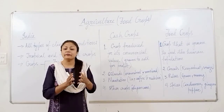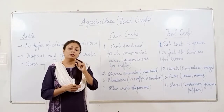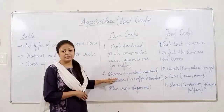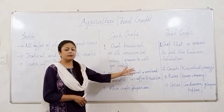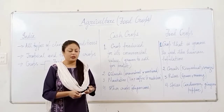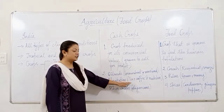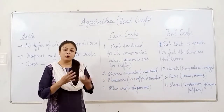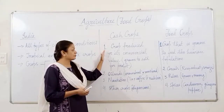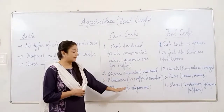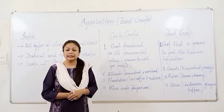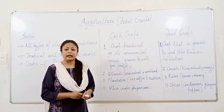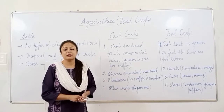The crops that are grown not for consumption but to sell them to earn profit are cash crops. Cash crops include oil seeds like groundnut, mustard, coconut, sesame etc., and plantation crops like tea, coffee, and rubber. Apart from these, sugarcane is also a cash crop. Sugarcane is used to produce sugar and it is sold for commercial value.